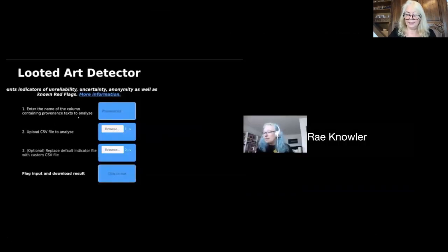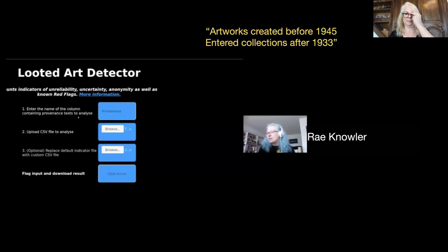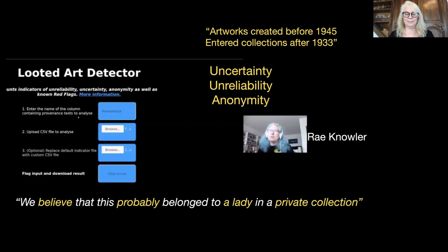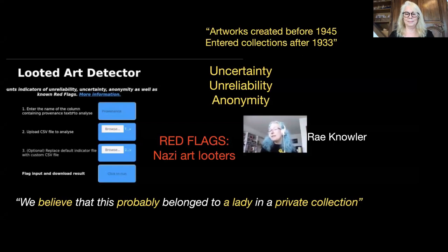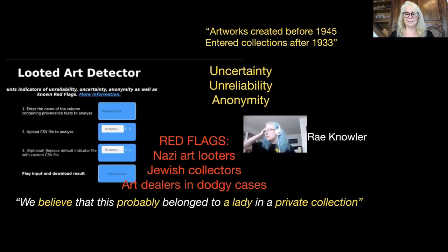The specific artworks the tool was designed to look at are ones created before 1945 and that entered collections after 1933. The indicators the tool searches for are around uncertainty, unreliability, and anonymity — language like 'we believe that this probably belonged to a lady in a private collection.' And also red flags: names of Nazi looters, Jewish collectors known to have been plundered or murdered, or art dealers known to have been involved in at least one dodgy deal of looted work.